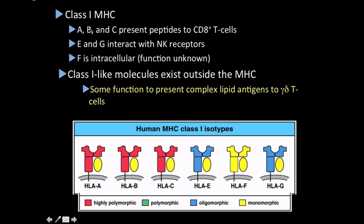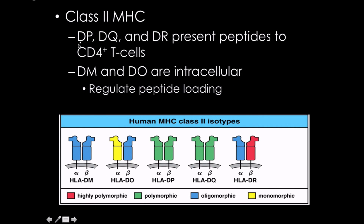For class 1, alpha A, B, and C present peptides to CD8 cytotoxic T cells. E and G interact with natural killer cell receptors. F is intracellular and monomorphic — its function is not fully understood, but the hypothesis is that it acts as a chaperonin. CD1 molecules exist on the outside of the MHC and function to present complex lipid antigens to gamma-delta T cells, which exist in tissue spaces like the skin, though we don't fully understand them.